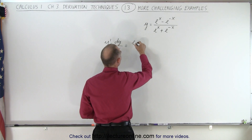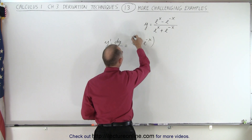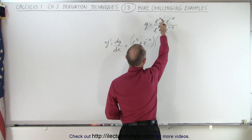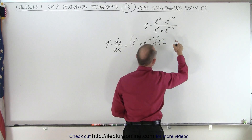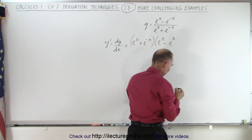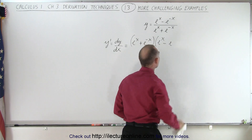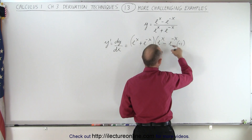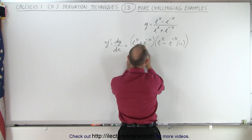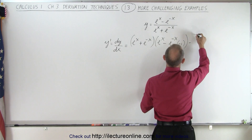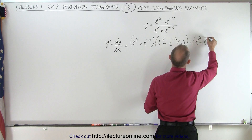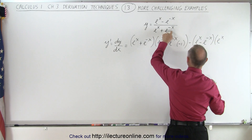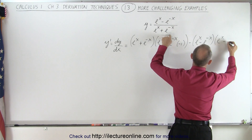I take the denominator, e to the x plus e to the minus x, times the derivative of the numerator — taking one term at a time. The derivative of e to the x is e to the x, and the derivative of e to the minus x: by the chain rule, e to the minus x times the derivative of minus x, which is minus one, giving us plus e to the minus x. So we have the denominator times the derivative of the numerator.